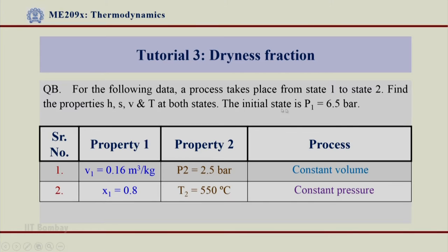The initial state p1, that is the pressure, is 6.5 bar. We have also been given v1 as 0.16 meter cube per kg. At state 2, one of the properties given is p2 as 2.5 bar. This process from state 1 to state 2 is a constant volume process, and therefore v1 is equal to v2.